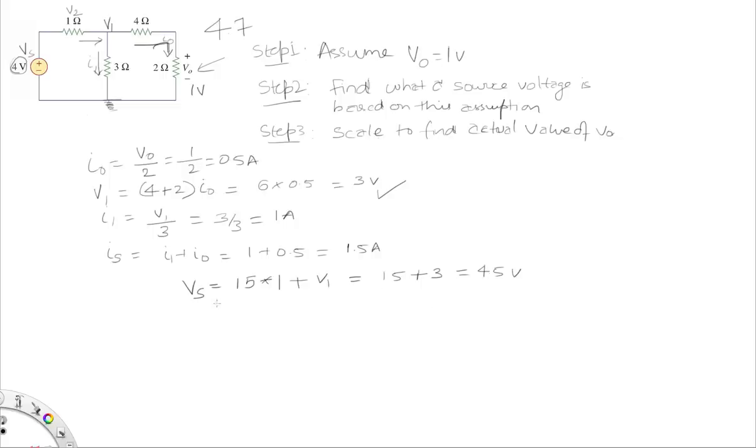But the V source calculated based on the assumption that V naught is 1 volt is 4.5 volts. But the actual value of V source is 4 volts, which implies that the actual value of V naught must be 4 divided by 4.5 volts, which is going to be 0.889 volts, or 889 millivolts. So that's the end of this problem.